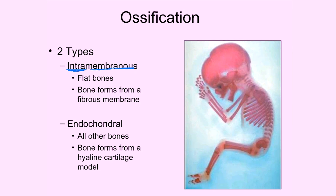A couple of good examples of flat bones help illustrate intramembranous ossification. The collar bones — the clavicles — are an example of flat bones primarily formed through intramembranous ossification. In addition, the skull bones, as you can see in the fetus here, are also considered flat bones and they form primarily through intramembranous ossification as well.